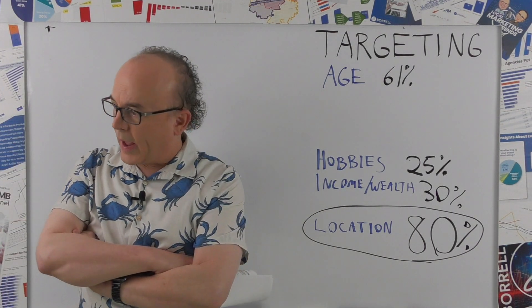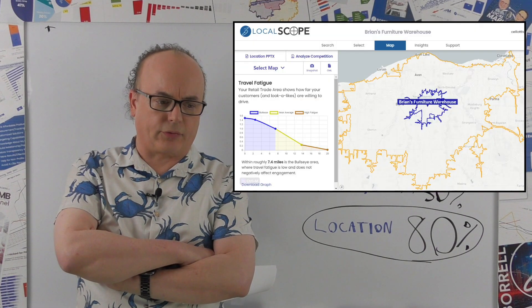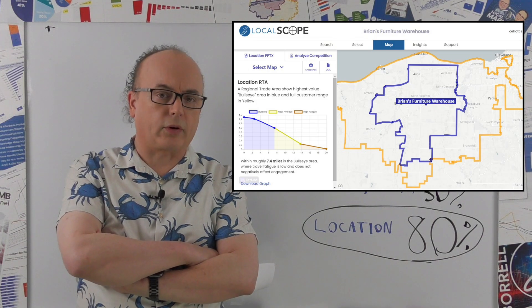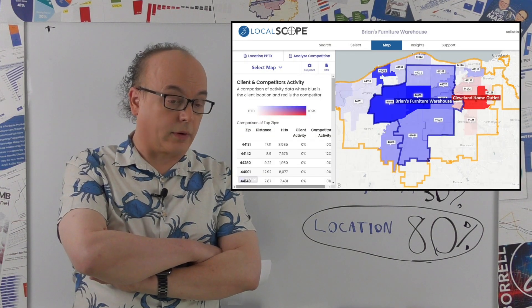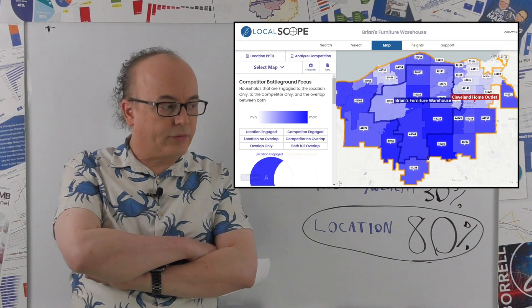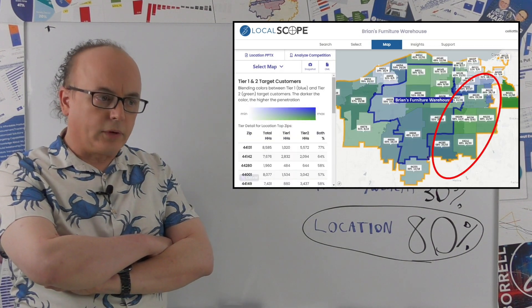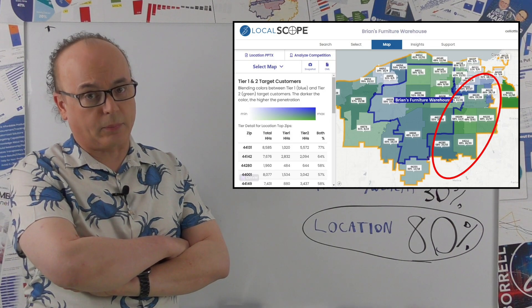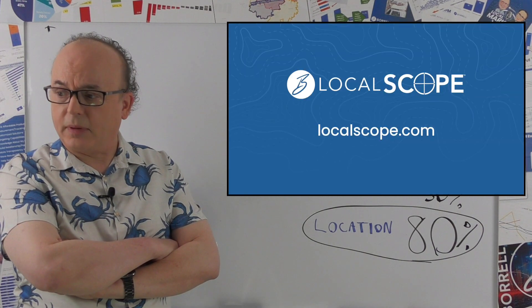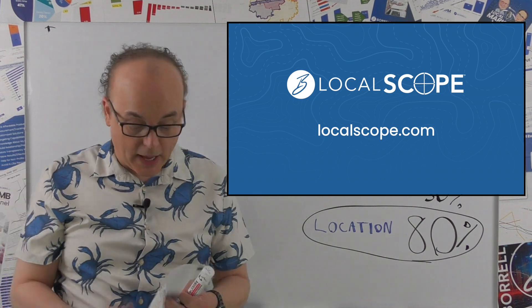Damn, you know what? If there was just some way that you could talk to a local advertiser about the exact geography that they should be concerned about, or where their customers come from, better yet where their competitors' customers come from, and then you could target those areas. Maybe someday a research company with a very handsome spokesmodel will come up with some kind of tool. Some kind of local scope?